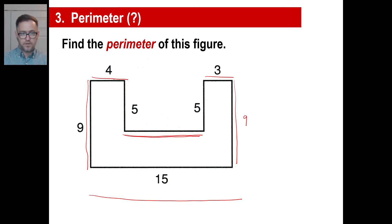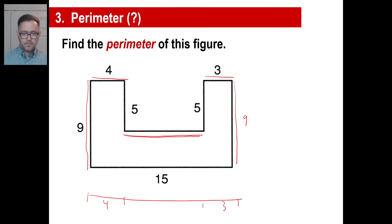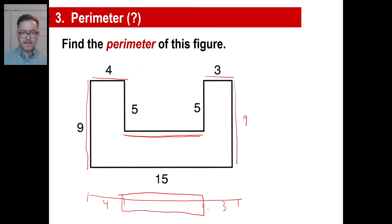If you just pull it straight down, it's 4 here and 3 there. So from here to here, there's going to have to be 15 minus that 7, which means it's going to be 8. We won't bother to add those together — you can do that later on.